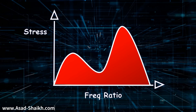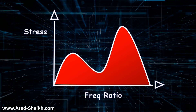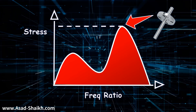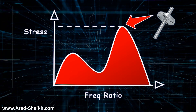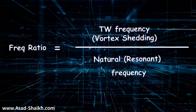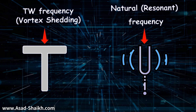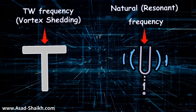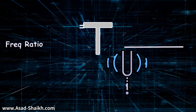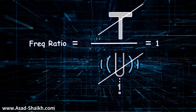If you understand this graph, then the entire wake frequency calculation will become very easy. For a thermowell, the point of highest amount of stress is what we must avoid. Frequency ratio is nothing but the thermowell frequency divided by the resonant frequency. When the vortex-induced thermowell frequency and the natural resonant frequency become equal, the frequency ratio becomes 1, and this is not good.